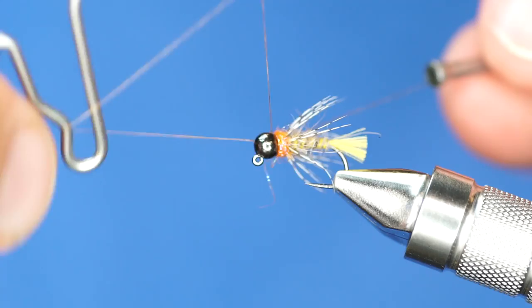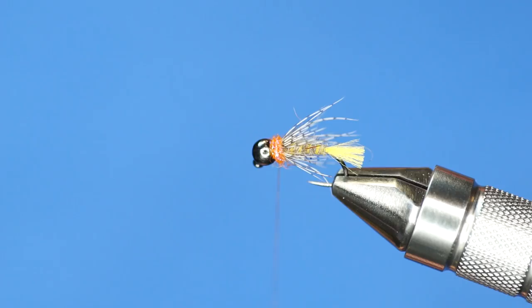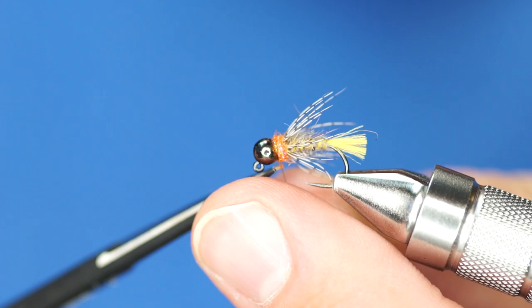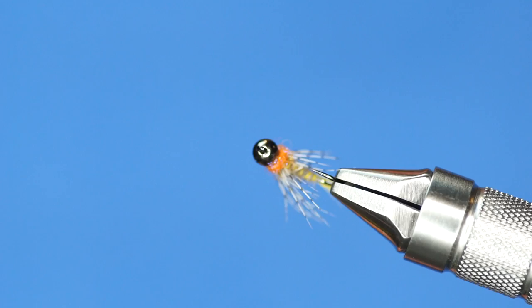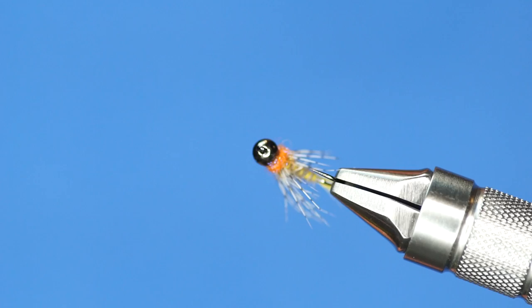And then we'll whip finish. These flies are designed to be tied very quickly. You could take this same fly and you could add CDC for the soft hackle instead of partridge, and it would work great. But anyway, as you can see, just kind of a representative fly. It probably looks like a bunch of different stuff. Simple to tie, and fish like to eat it.